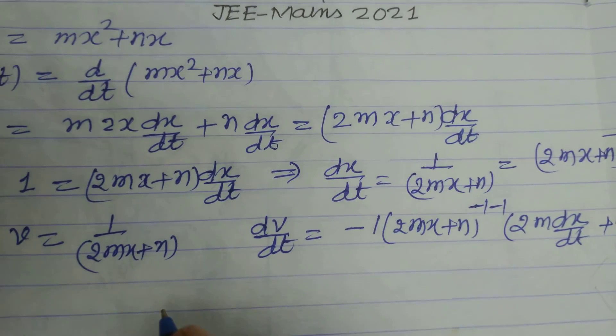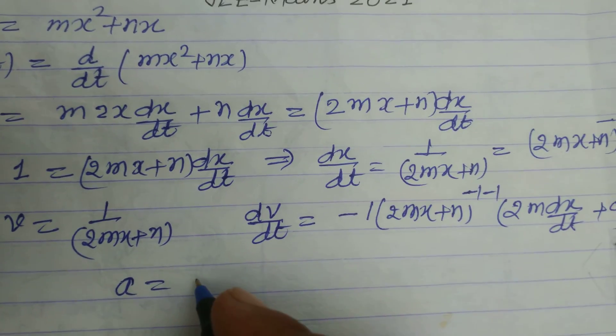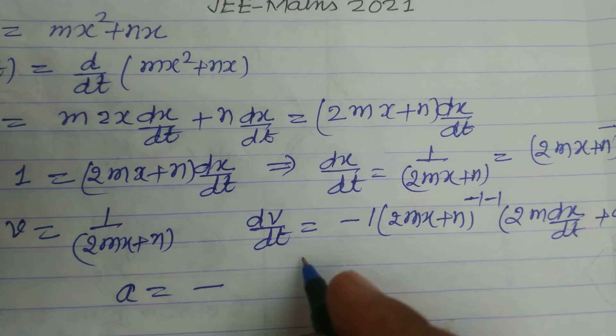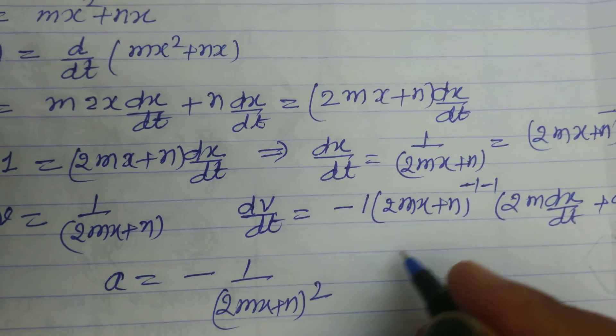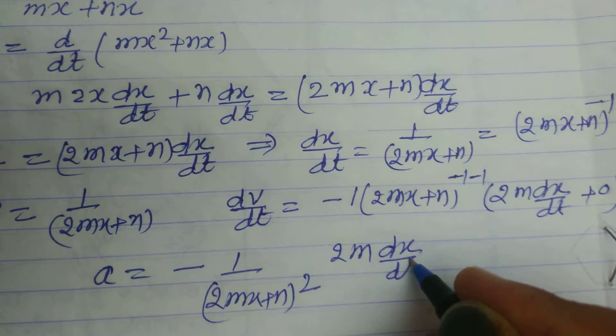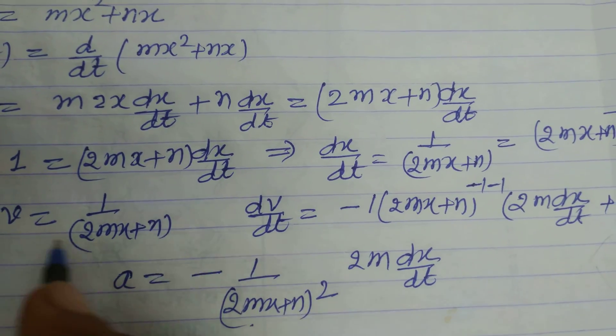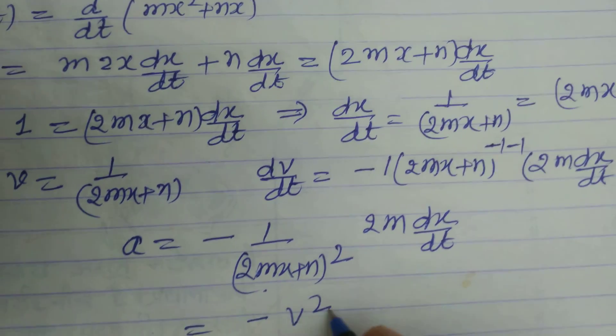So this is acceleration a = -1/(2mx + n)² times 2m(dx/dt). This dx/dt is v, so we substitute v².